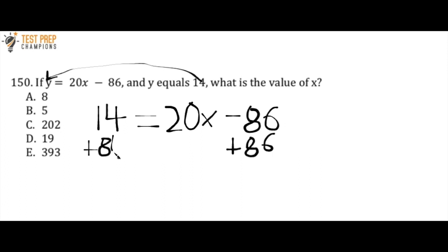Now when I do that what we see is that the 86s cancel out on the right hand side. And I have to add 86 over here as well because whatever I do to one side of the equation I also have to do it to the other. So I'll have 100 equals 20x. Now if you're wondering where the 100 came from, that's because 14 plus 86 is 100.